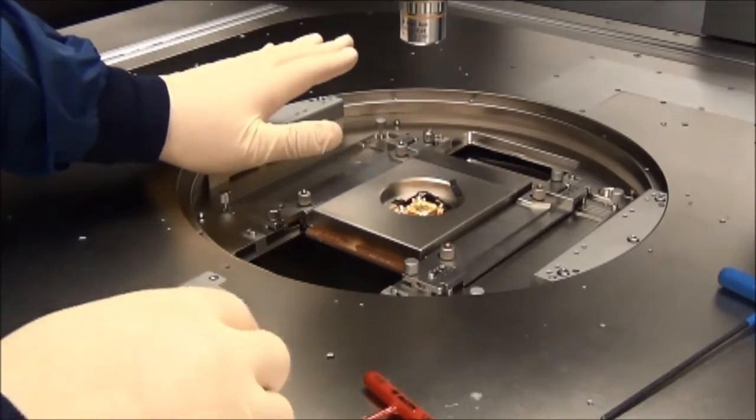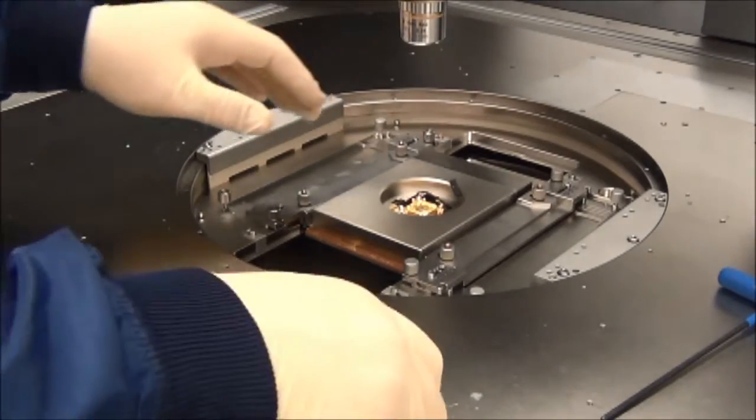During our scrub mark based planarity check, we found the probe marks at the top of the array to be light, indicating that the bottom of the probe card needs to be raised.